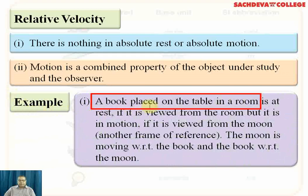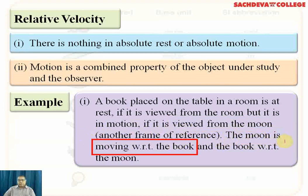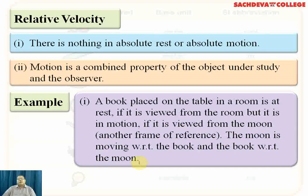A book placed on the table in a room is at rest if viewed from the room, but it is in motion if viewed from the moon — another frame of reference. The moon is moving with respect to the book and the book with respect to the moon. A person on the surface of the earth is stationary with respect to earth, but with respect to the moon or space, the earth is moving, so the person on earth is also moving. The relative velocity is found with respect to the moon as frame of reference.